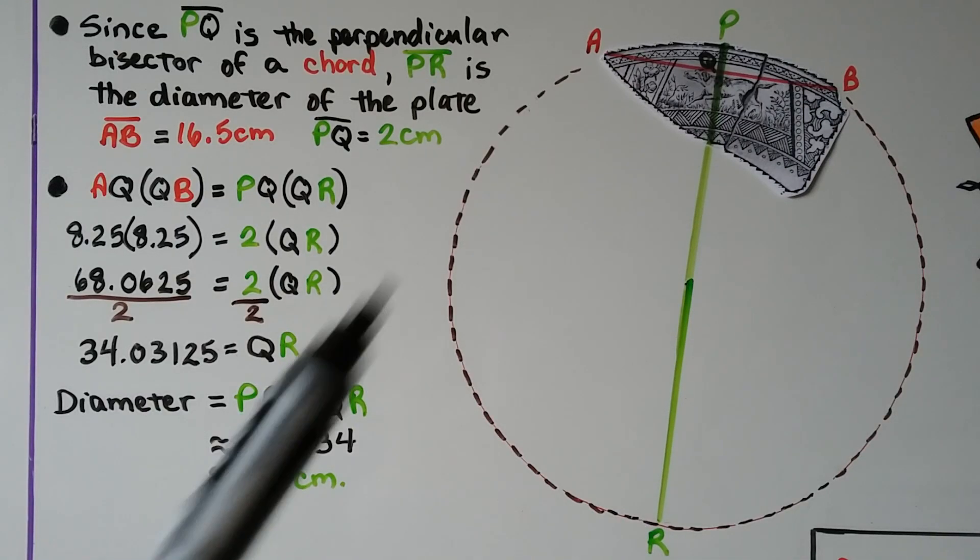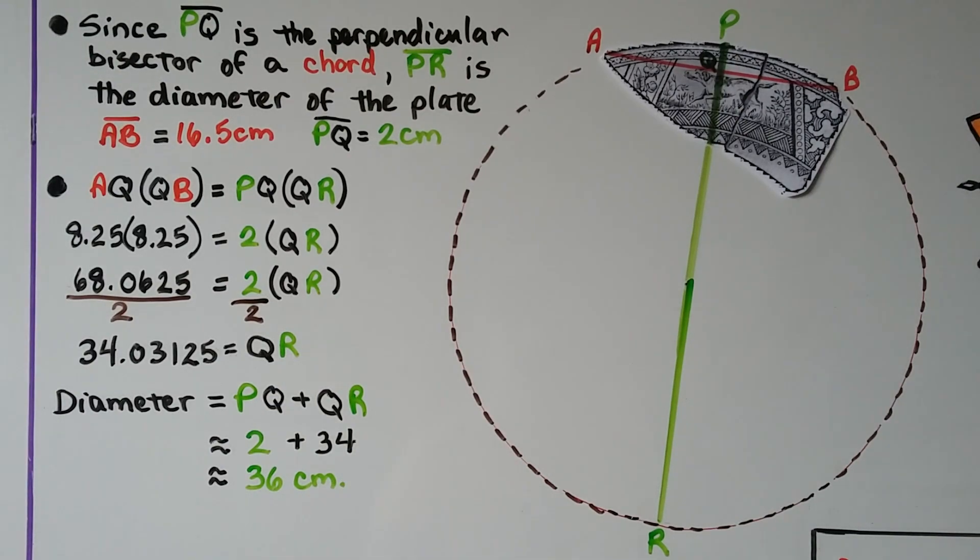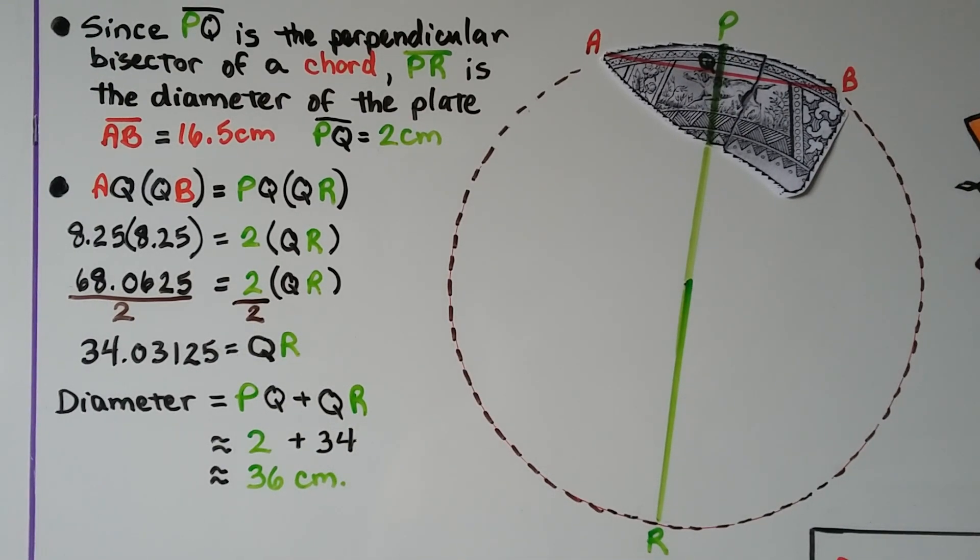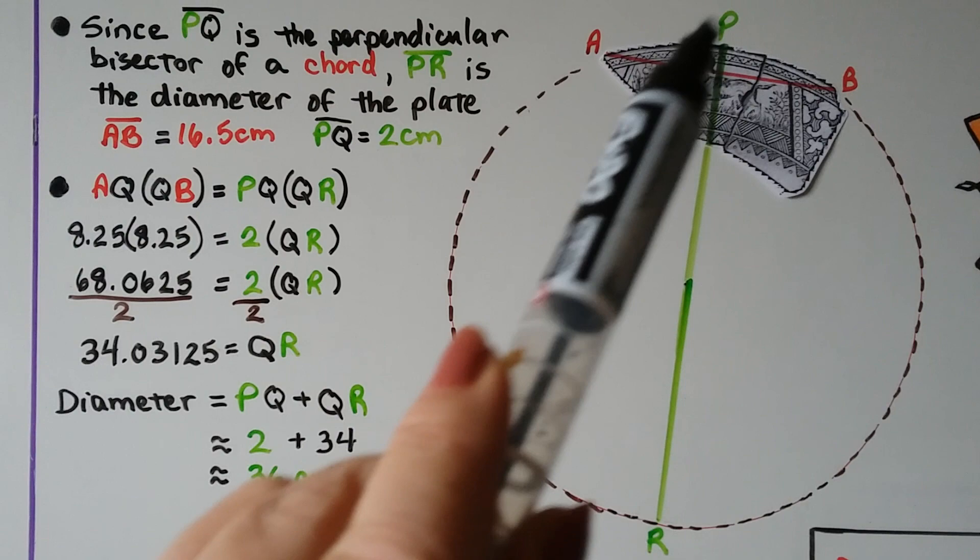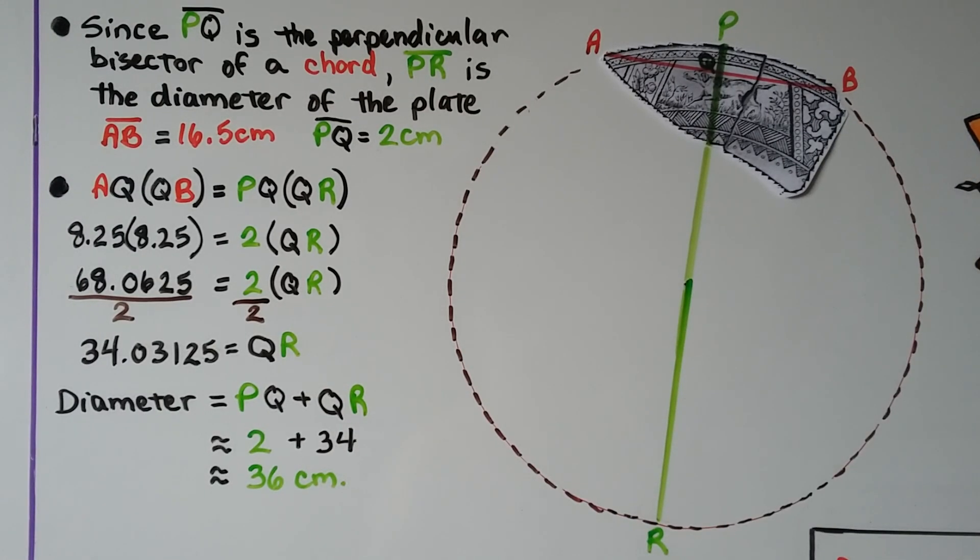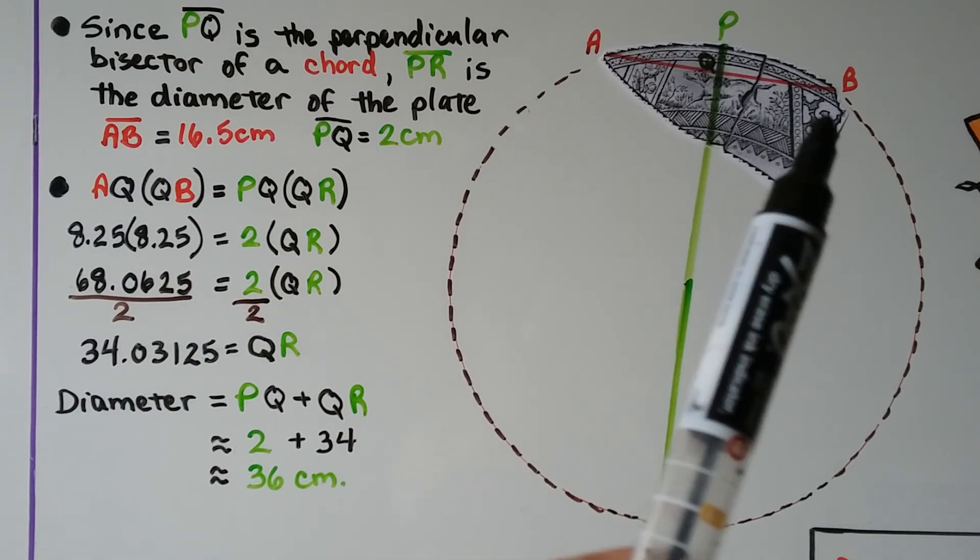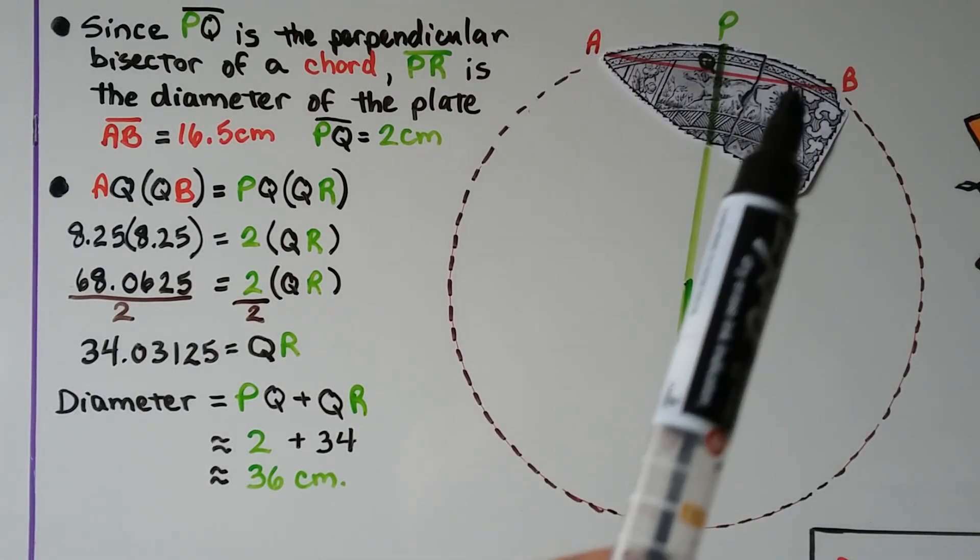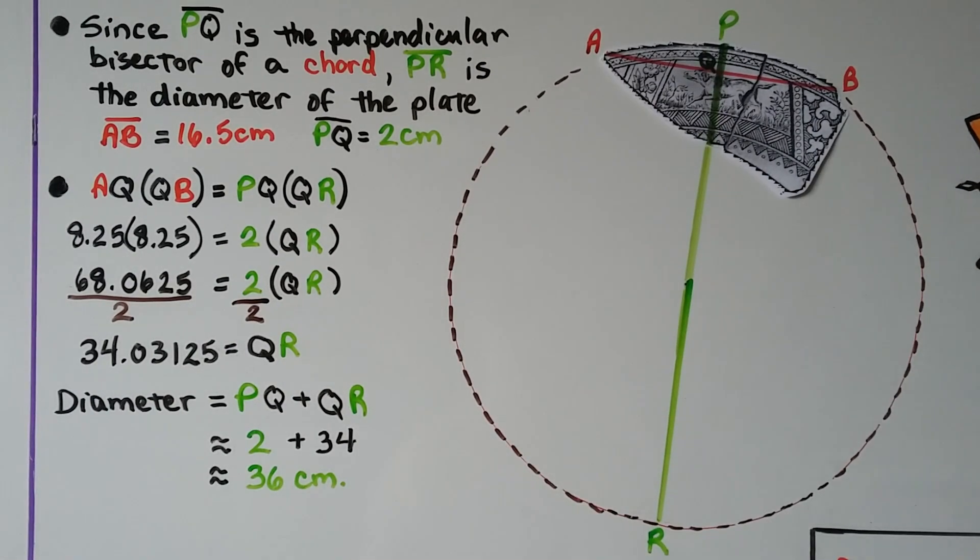Well, since PQ is the perpendicular bisector of a chord, PR, this entire length, is the diameter of the plate. We know that AB is 16.5 centimeters and PQ is 2 centimeters.